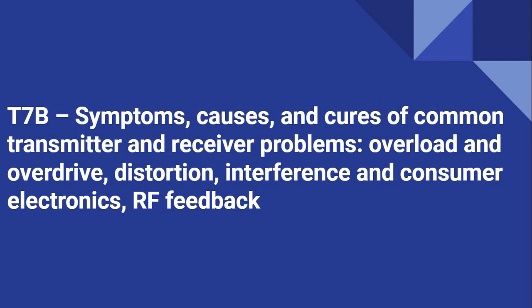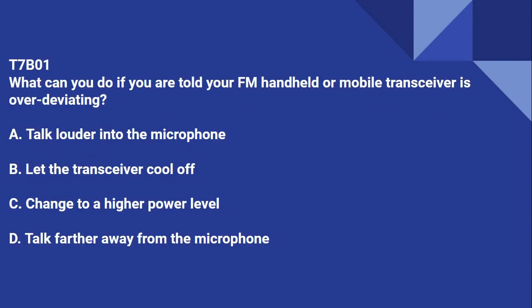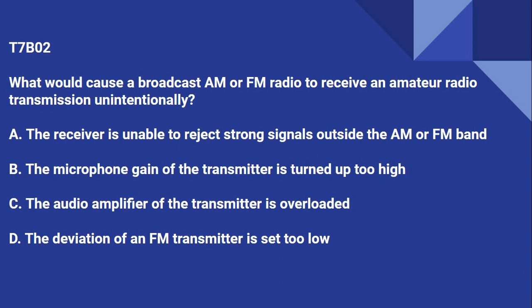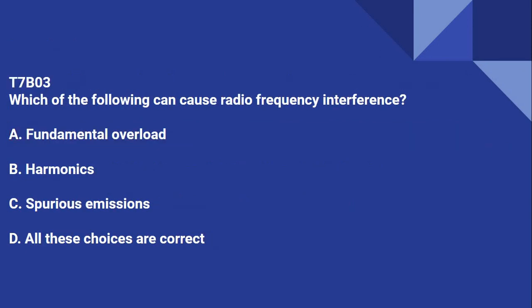T7B covers symptoms, causes, and cures of common transmitter and receiver problems: overload and overdrive, distortion, interference with consumer electronics, and RF feedback. T7B01: What can you do if you're told your FM handheld or mobile transceiver is over-deviating? Talk further away from the microphone. T7B02: What would cause a broadcast AM or FM radio to receive an amateur radio transmission unintentionally? The receiver is unable to reject strong signals outside the AM or FM band. T7B03: Which of the following could cause radio frequency interference? All of these choices are correct — fundamental overload, harmonics, and spurious emissions.